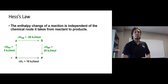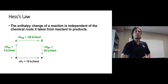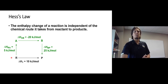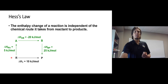In the alternate route shown in green, R is first converted to A with an enthalpy change delta H_RA of 5 kilojoules per mole, then A is converted to B with delta H_AB of negative 20 kilojoules per mole, followed by a conversion of B to P with delta H_BP equals 25 kilojoules per mole. This is just an alternative path from R to P, and Hess's law says the overall enthalpy changes should be equivalent.